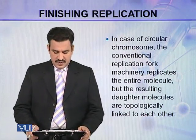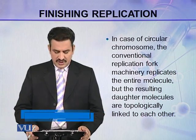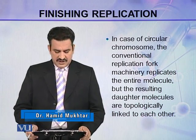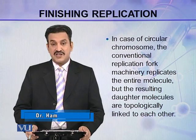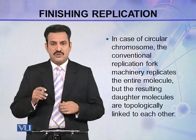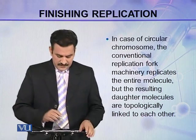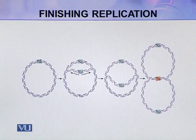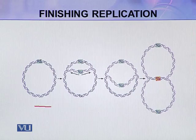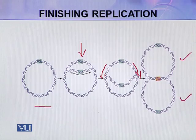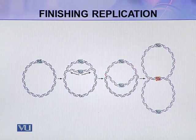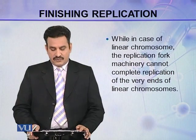In the case of circular chromosomes, the conventional replication fork machinery replicates the entire molecule. But the resulting daughter molecules are topologically linked to each other. Replication proceeds and at the end, the two chromosomes will be linked to each other, as you can see here. This is a circular DNA chromosome — replication starts and proceeds in both directions, and as a result two chromosomes are formed, but these two chromosomes are linked to each other at a specific site.